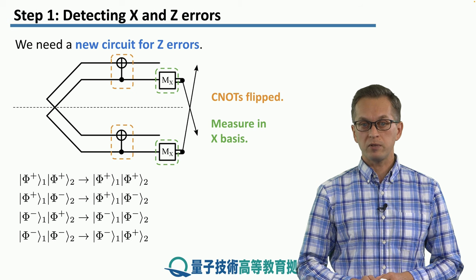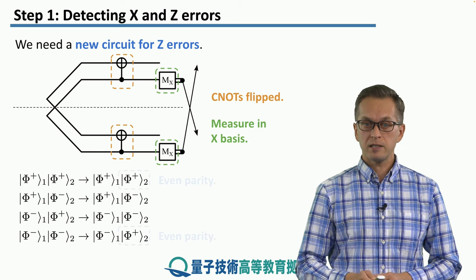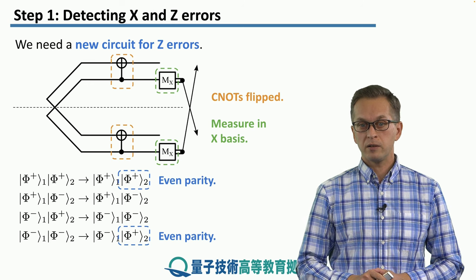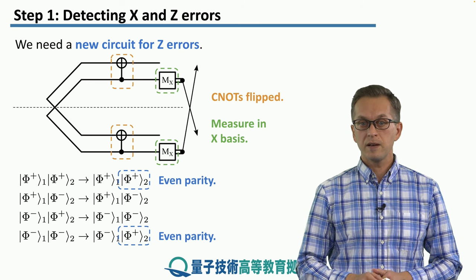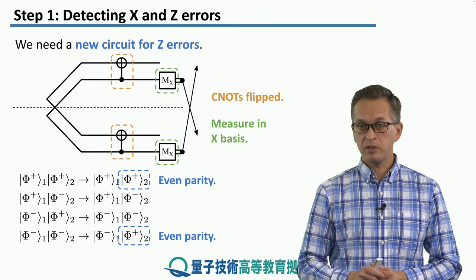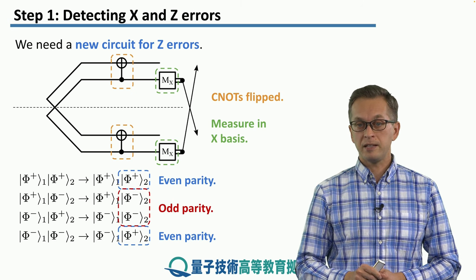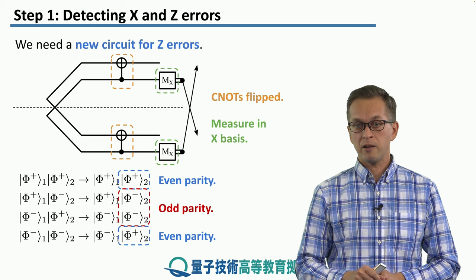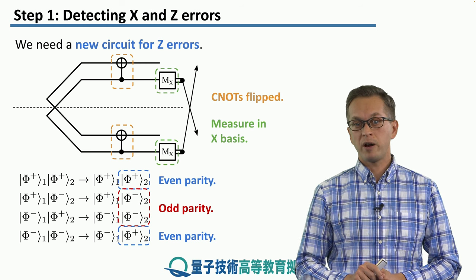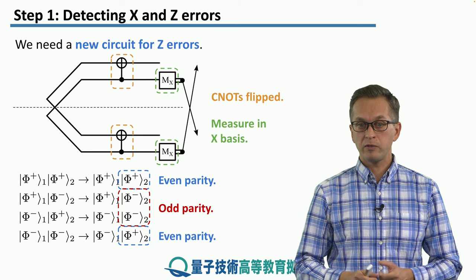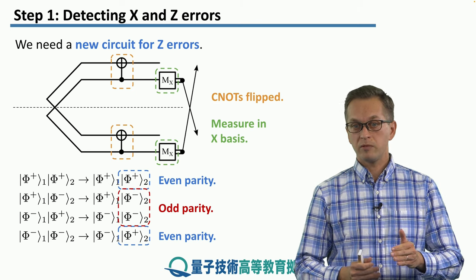So let's get back to our four possibilities. And in this case, we can easily check that if pair two is in the state phi plus, this has even parity in the X bases. But if the state is in phi minus and it's affected by an error, then this gives us odd parity in the X bases measurement, meaning that again, half of the time we discard and the other half we keep.